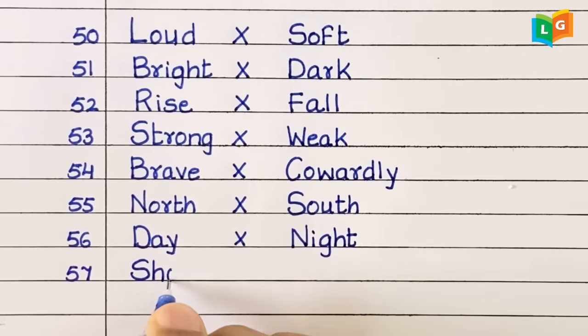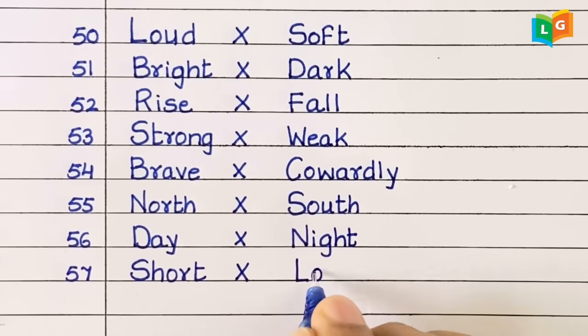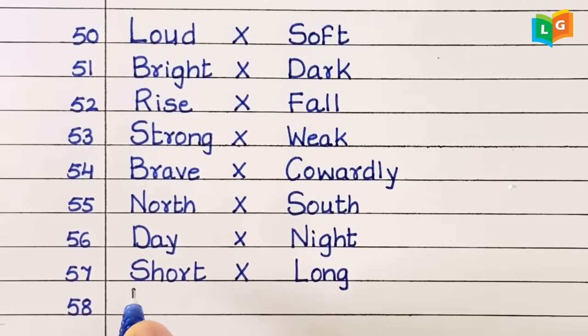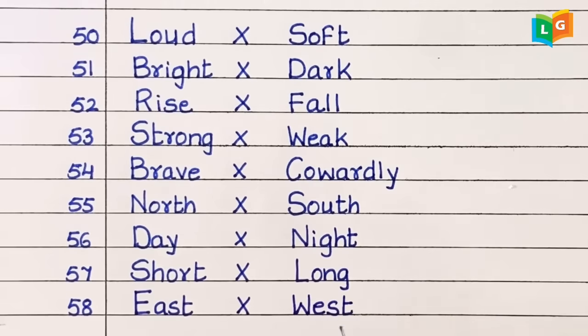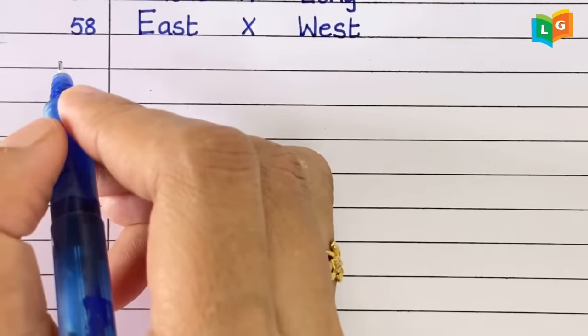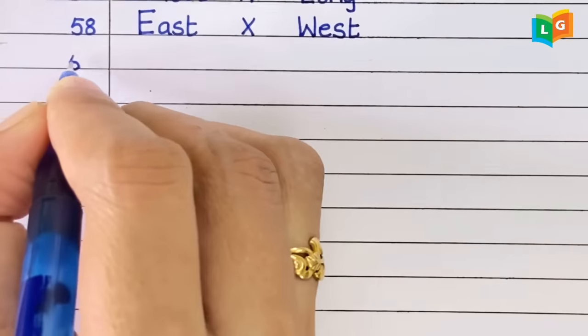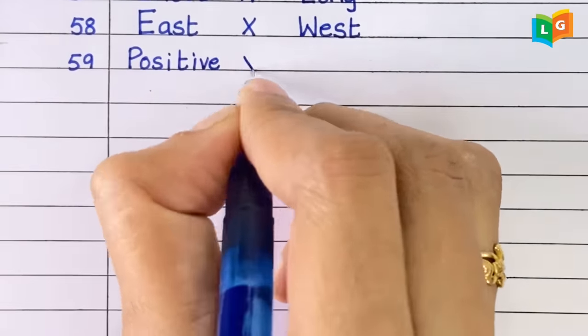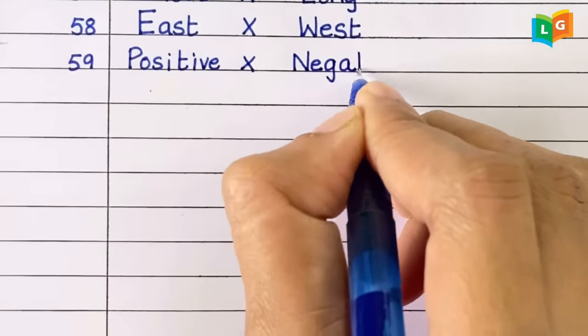Fifty-seven, short, long. Fifty-eight, east, west. Fifty-nine, positive, negative.